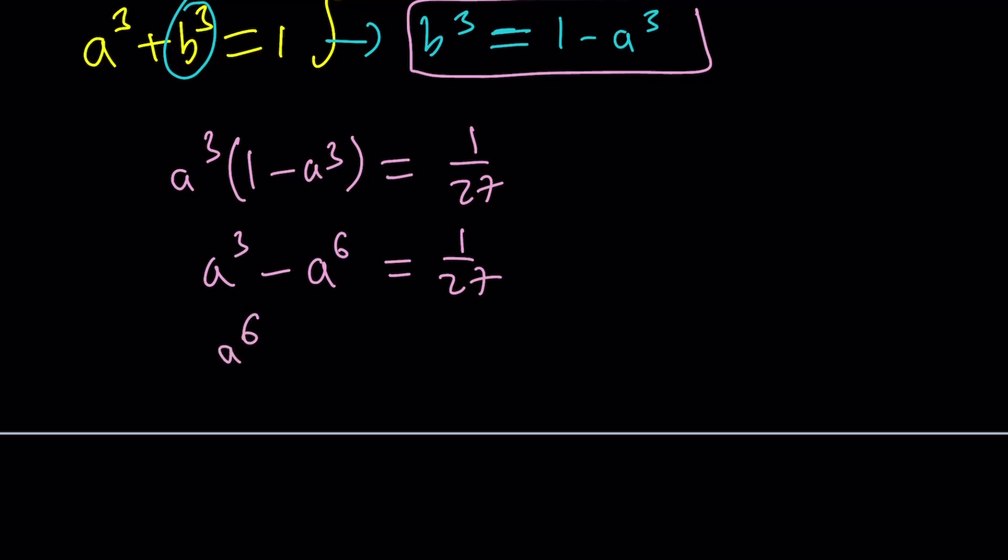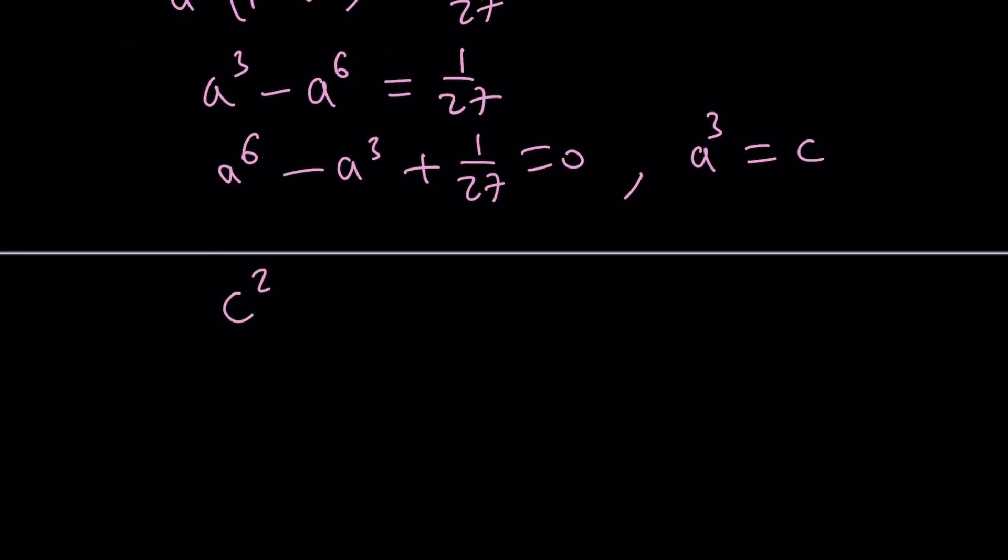And then use substitution to turn this into a quadratic. You can set a cubed equal to c. And then this gives you c squared minus c plus 1 over 27 equals 0. And by solving this equation you get the a cubed and b cubed values. Of course you're going to have to take cube roots of radicals. And then you're going to get one of the roots.